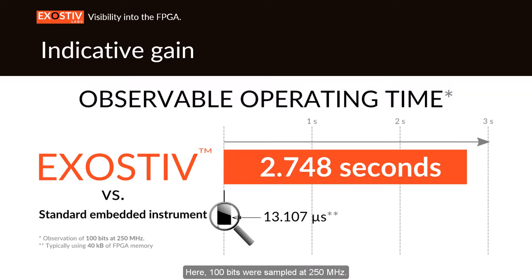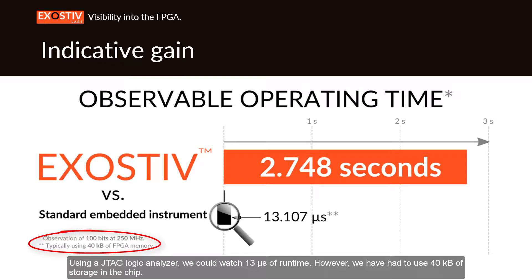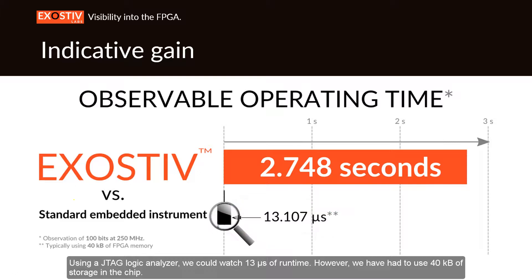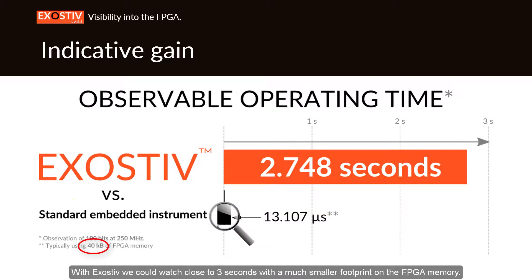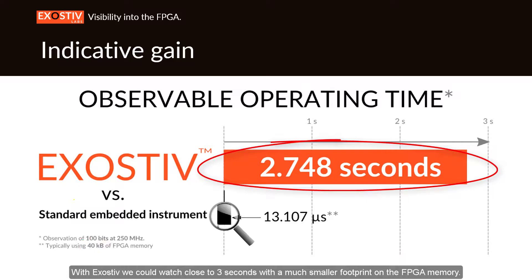Here, 100 bits were sampled at 250 MHz. Using a JTAG logic analyzer, we could watch 13 µs of runtime, having used 40 KB of storage in the chip. With Exhaustive, we could watch close to 3 seconds with a much smaller footprint on the FPGA memory.